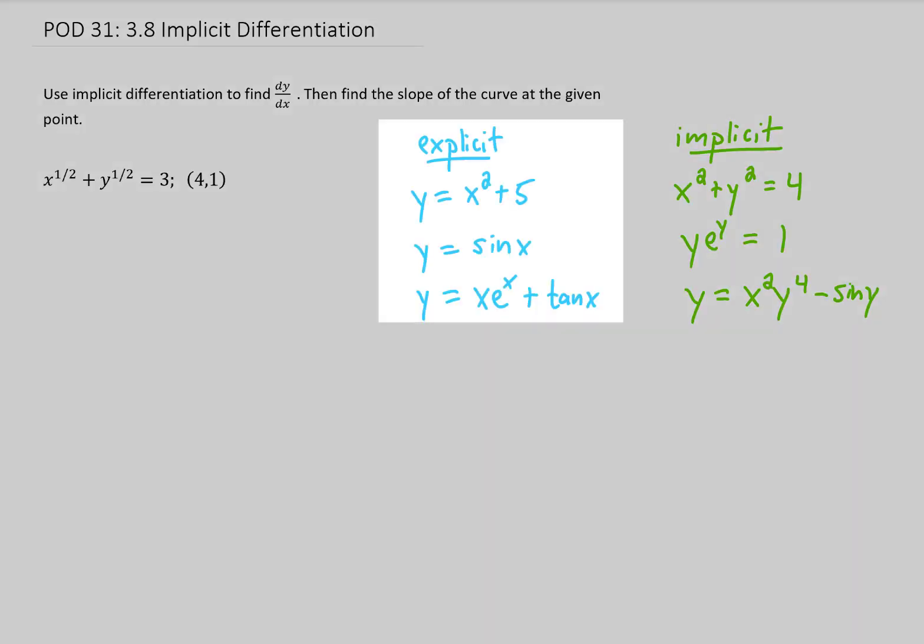You'll notice that in each explicit function, we have y on one side of the equation and a function of x on the other side. For each implicitly defined equation or function, we don't have y solved for by itself and really there's not a good way to get y by itself on one side of the equation, so we call each of these implicit.